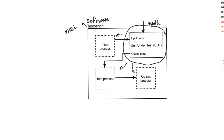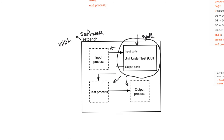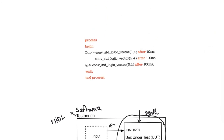Generating inputs means that we generate waveforms that we apply to the unit under test. We talked a lot about how we can generate waveforms when we discussed the wait statement in VHDL. In this example, the input DN — a four-bit bus — is going to have the value of 1 after 10 nanoseconds, value of 2 after 100 nanoseconds, value of 3 after another 100 nanoseconds, and then it will loop and continue to periodically update these values.